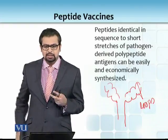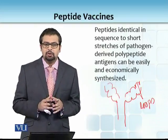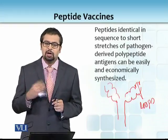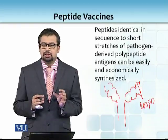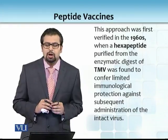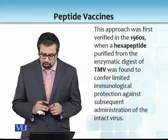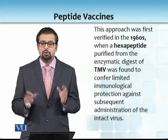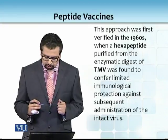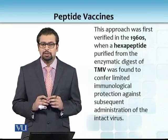To it's being driven by two things — ek toh in regions ke andar jo complementarity hai to bind that, and apart from that complementarity, the flexibility of the whole system. Ab hum is flexibility ka faida uthana chahte hain ke agar hum apne antigen ki quantity bilkul hi choti kar dein — and that's the concept behind peptide vaccines. The first time it was tried in 1960, it was with a hexapeptide, yani ke sirf 6 amino acid long peptide ko basically enzymatic digest ke against jo tobacco mosaic virus ka tha.